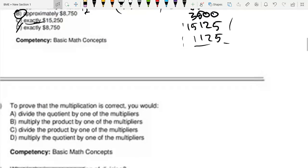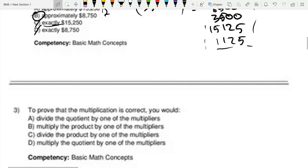Now the next question - sorry, I didn't re-type text on top of this just because it's a pretty short question. To prove that multiplication is correct, you would: Option A is divide the quotient by one of the multipliers. Option B is multiply the product by one of the multipliers. Option C is divide the product by one of the multipliers. And option D is multiply the quotient by one of the multipliers.